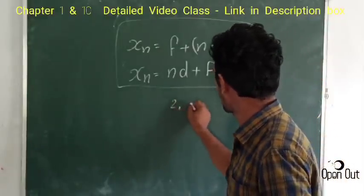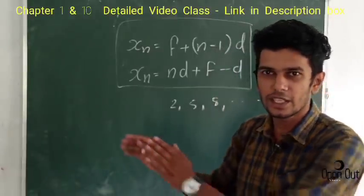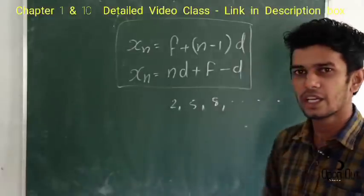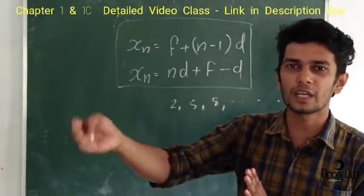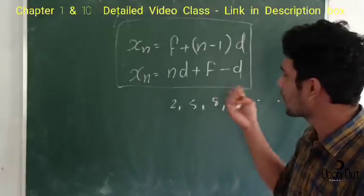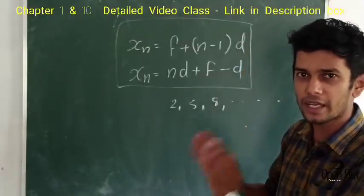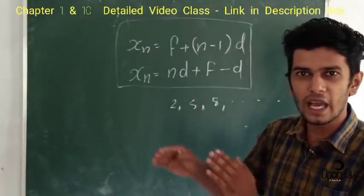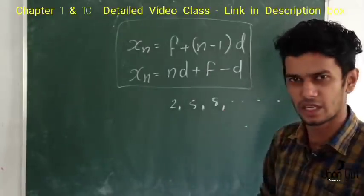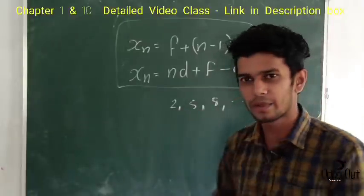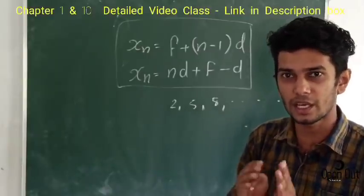These are two, five, eight — it doesn't matter if there is a common difference. First of all, if we aim to do an algebraic form and make an example of a sequence, then we learn from the algebraic form like that.